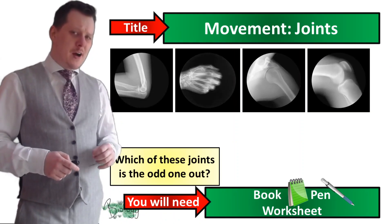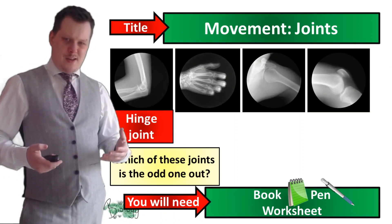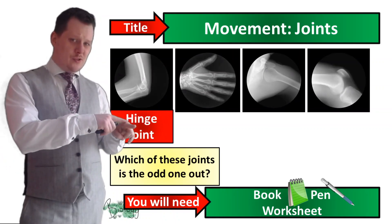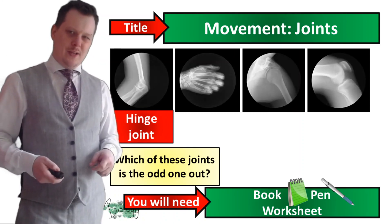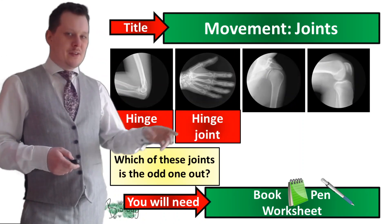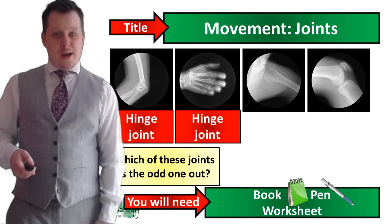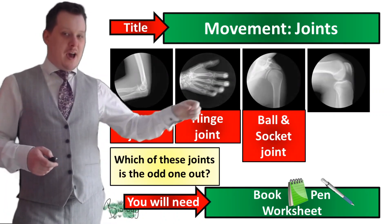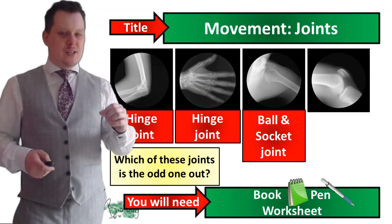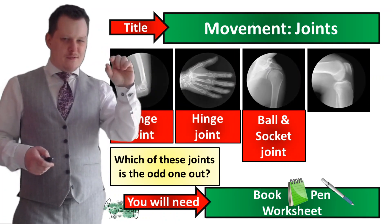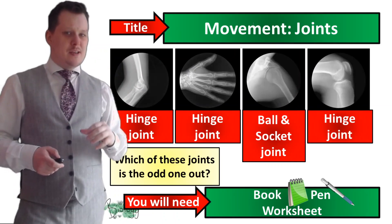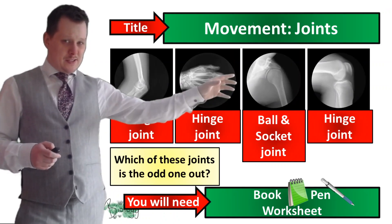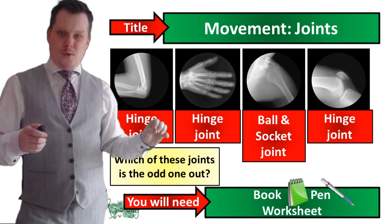Well done if you've identified the first one as the elbow joint — this is an example of a hinge joint. The hand joints, specifically the fingers rather than the knuckle, are also examples of hinge joints. The joint where the femur attaches to the pelvis is an example of a ball and socket joint. And then the knee, which has the patella (the kneecap) in front of it, is another example of a hinge joint. So my odd one out is the hip because it is a ball and socket joint.